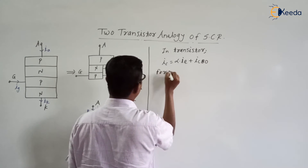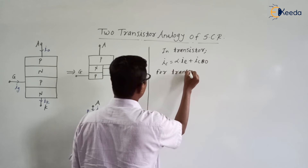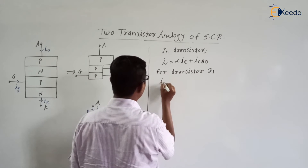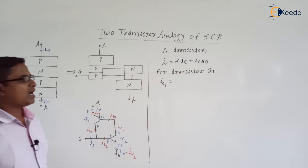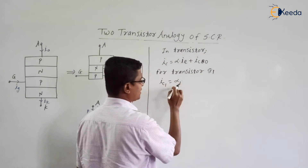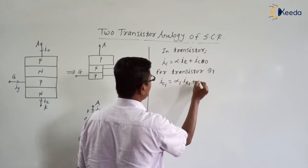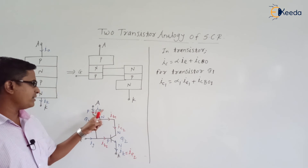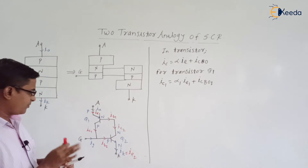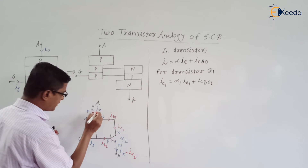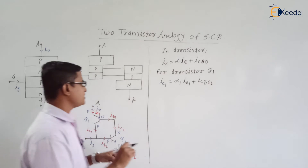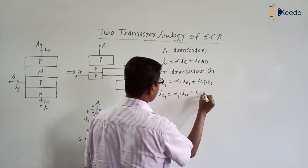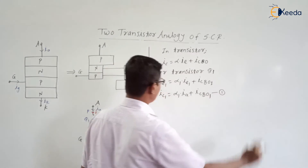For transistor Q1, we can write IC1 = alpha1 × IE1 + ICBO1. Since IE1 is equal to IA, we can write IC1 = alpha1 × IA + ICBO1. Consider this as equation 1.